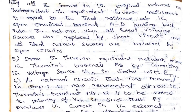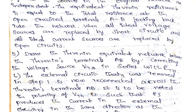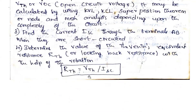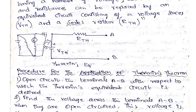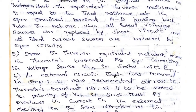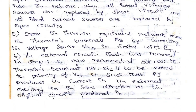Step 5: Draw the Thevenin's equivalent network between terminals A and B by connecting the voltage source VTH in series with RTH. Step 6: The external circuit that was removed in step 1 is now reconnected. Say for example, this load resistance we removed — it is now reconnected here. After calculating VTH and RTH, you need to connect this load resistance here. Then you need to find out the load current.